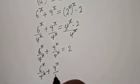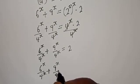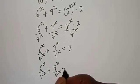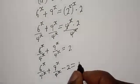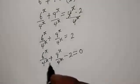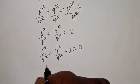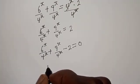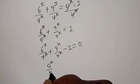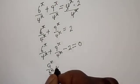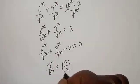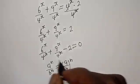Here we have 6 raised to the power s over 4 raised to the power s, plus 9 raised to the power s over 4 raised to the power s, minus 2 is equal to 0. Take note that if you have a raised to power n over b raised to power n, this equals a over b to the power of n.